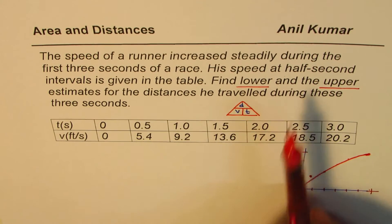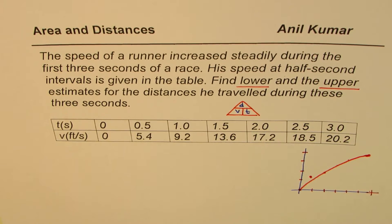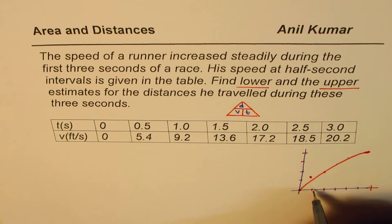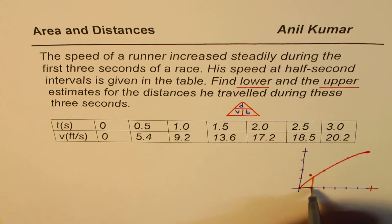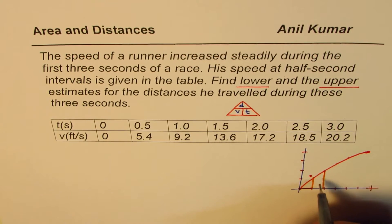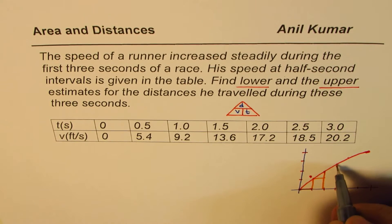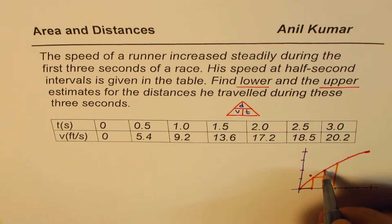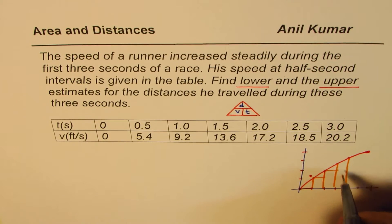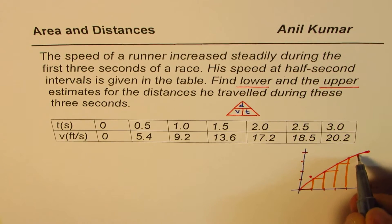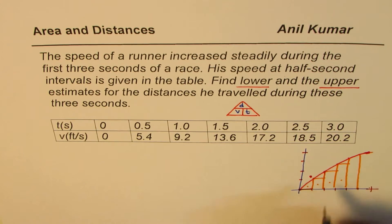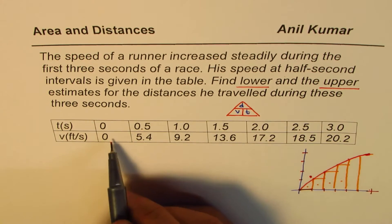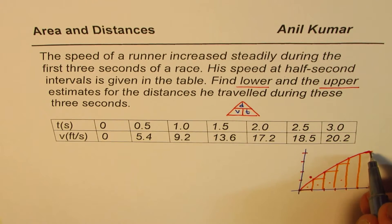For the lower bound, the rectangles use the left endpoint of each interval. So the first rectangle has height 0 (the velocity at the start), the second rectangle has the next velocity value, and so on. There are 6 rectangles in total — one for each half-second interval over 3 seconds.